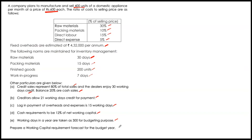We have to prepare a working capital requirement forecast for the budget year. We need to know how much to invest in raw material stock, packing material, finished goods, work in progress, and debtors. We also have to see how much is going to be funded, because funding can happen through creditor support — creditors for raw material, creditors for packing material, and creditors for expenses and overheads. Once we net current assets and current liabilities, we get net working capital, and on that we provide for 12%.